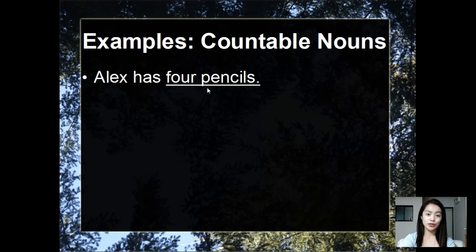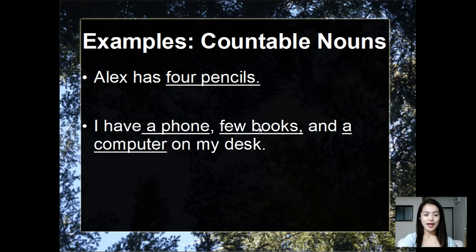Next: I have a phone, few books, and a computer on my desk. Can you spot the countable nouns in this sentence? You have phone, books, and computer. This time we use article a and the word few to modify these countable nouns: few books and a computer.